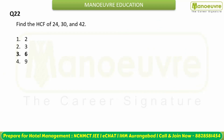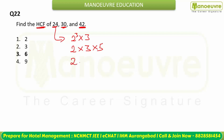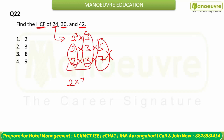Find the HCF of 24, 30, and 42. Prime factorization: 24 = 2³ × 3; 30 = 2 × 3 × 5; 42 = 2 × 3 × 7. Common factors: 2¹ and 3¹. HCF = 2 × 3 = 6. You can also verify directly by checking which is the highest number dividing all three.